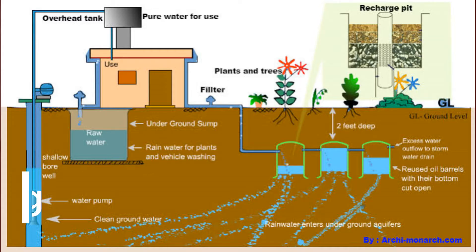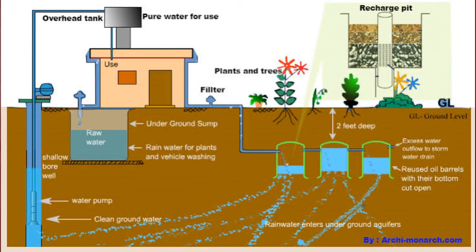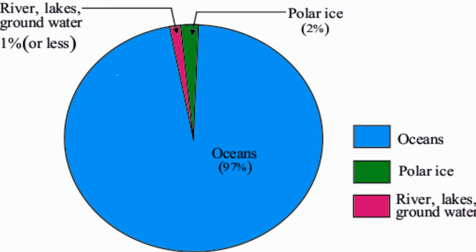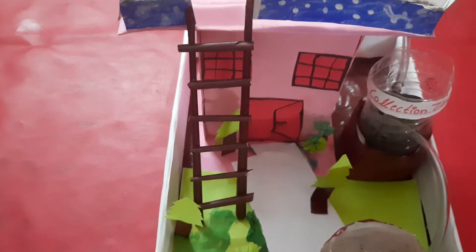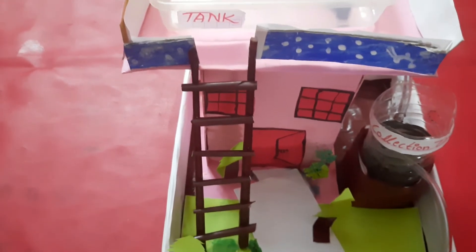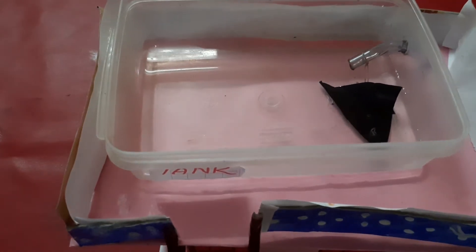Today I am going to explain about rainwater harvesting. We all know that the percentage of fresh water available on our land is less, so we should save each drop of water. The best method is rainwater harvesting. Rainwater harvesting is the process of saving rainwater.